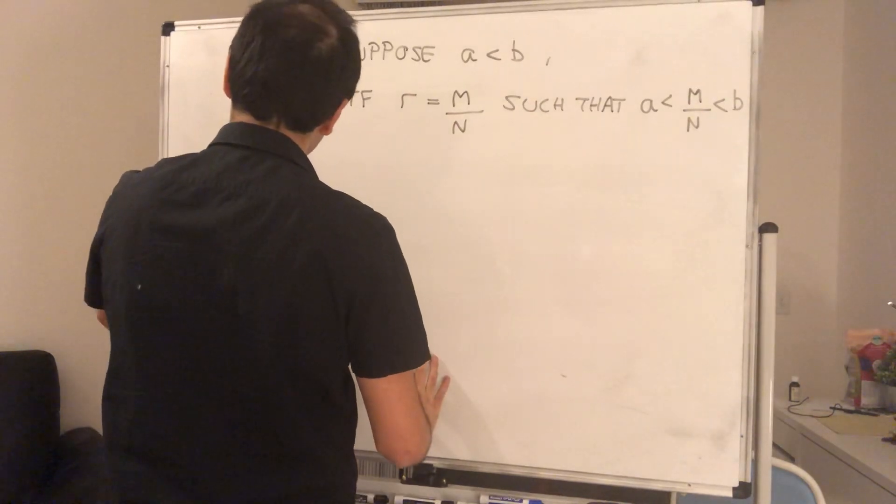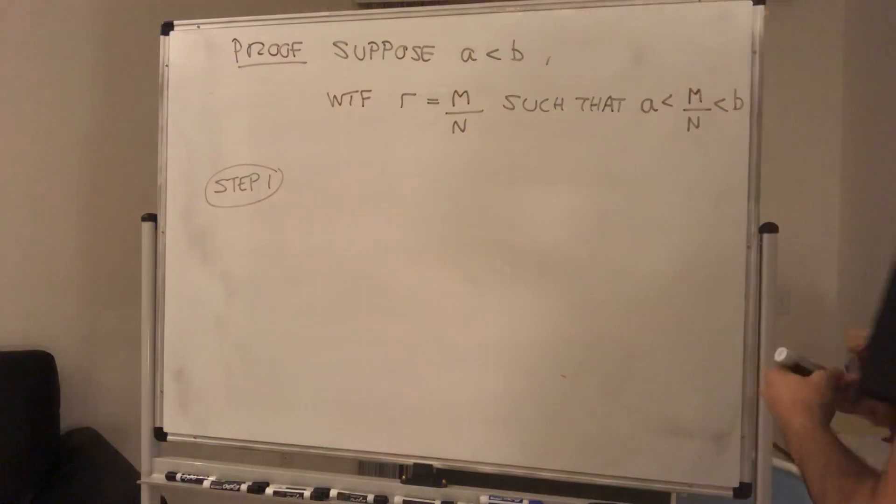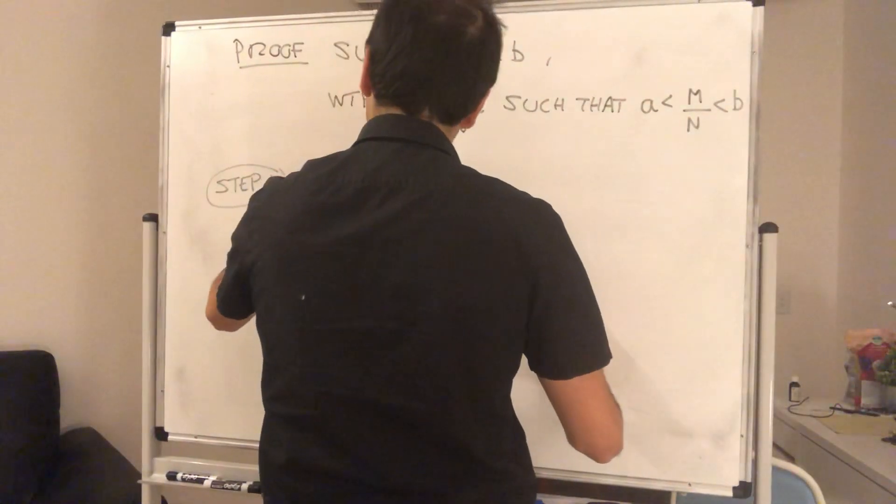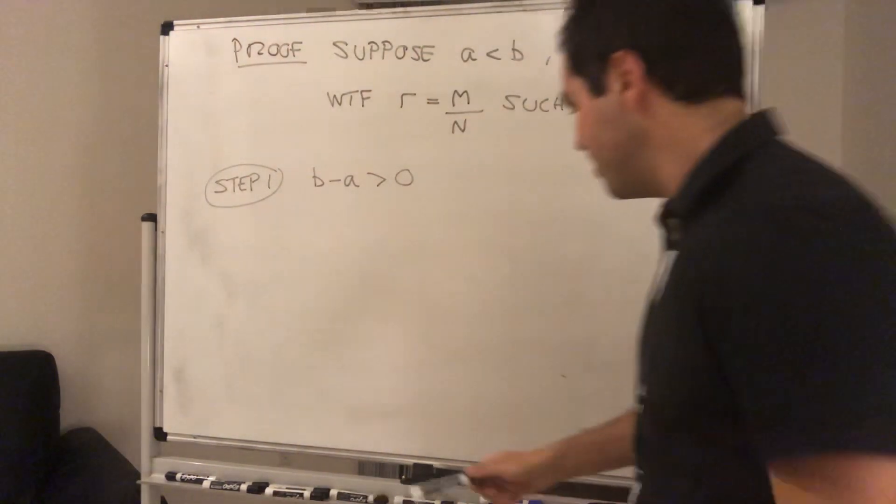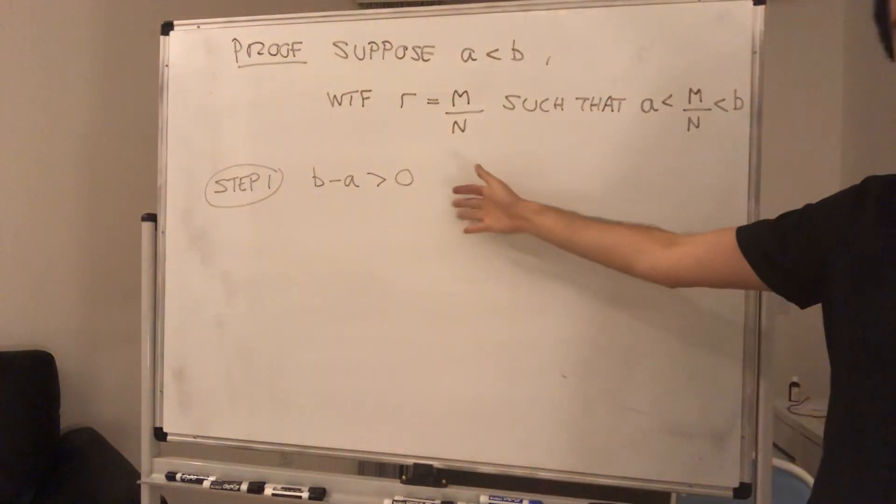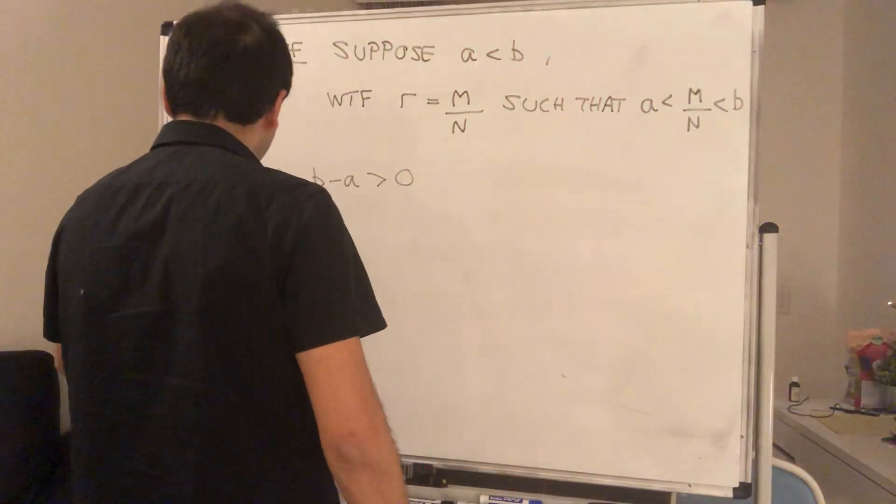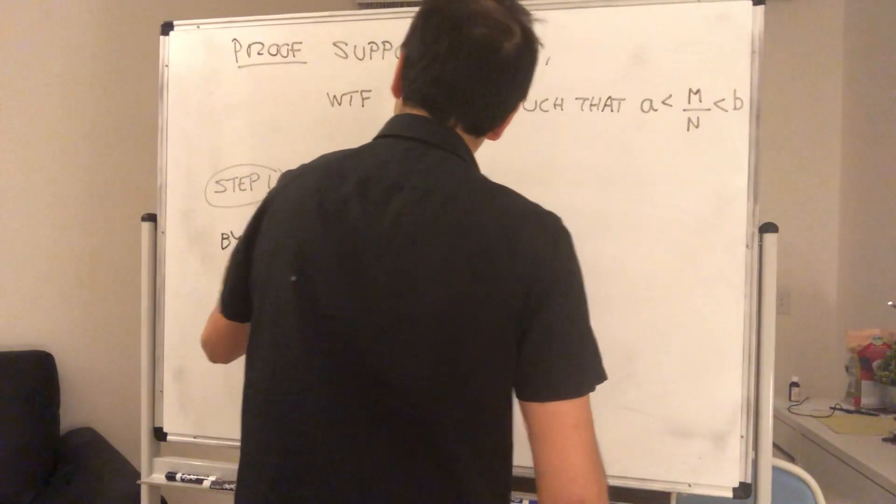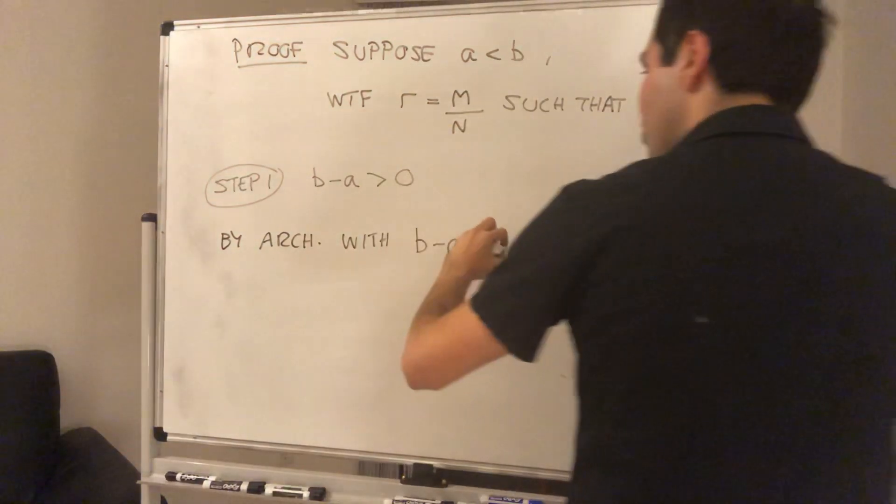So how do we do this? Well, first of all, let's find the denominator n. And the way we'll do this, because notice a is less than b, so we know b minus a is positive. So it is a small positive number, which you should think of as currency. Why currency? Because we want to use the Archimedean property. So by the Archimedean property, with currency b minus a,